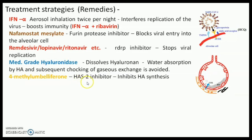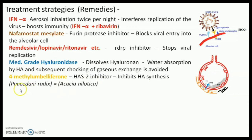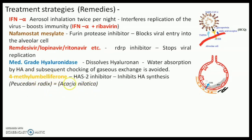This drug is called 4-methylumbelliferone. It is obtained from a plant called Peucedanum radix, and Chinese scientists and doctors have used this extract. In India, the equivalent plant that produces 4-methylumbelliferone in good quantity is Acacia nilotica, which we call babool. So this can be a drug of choice in combination with others.